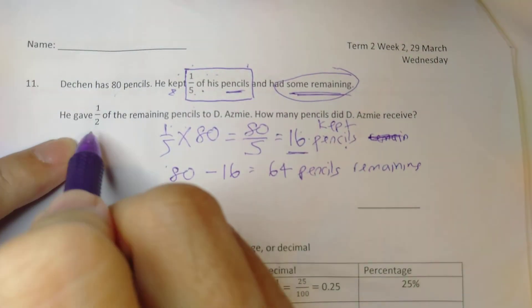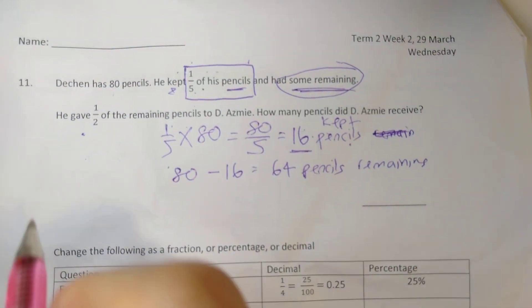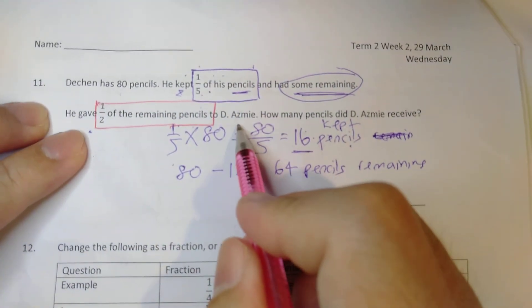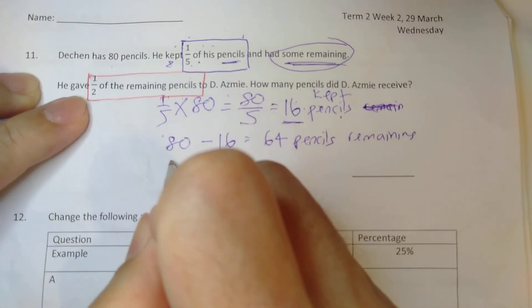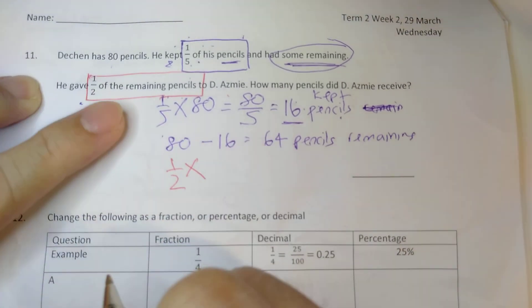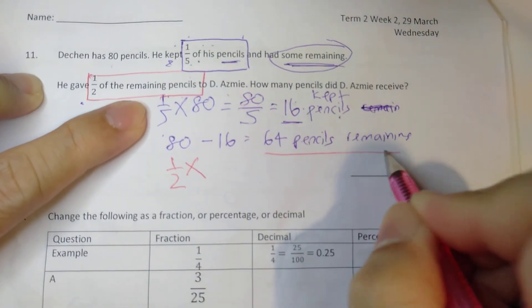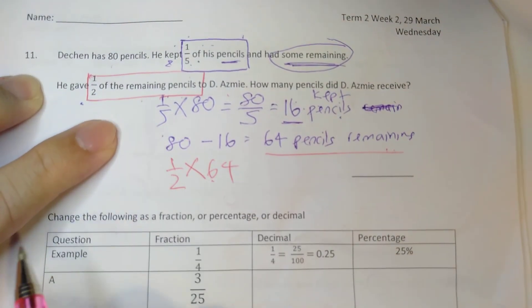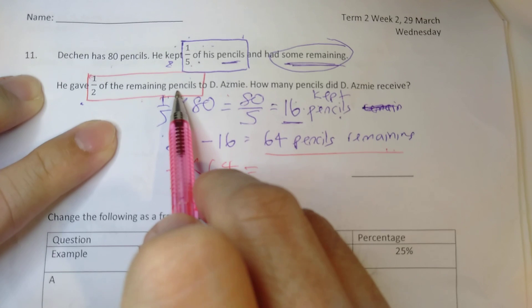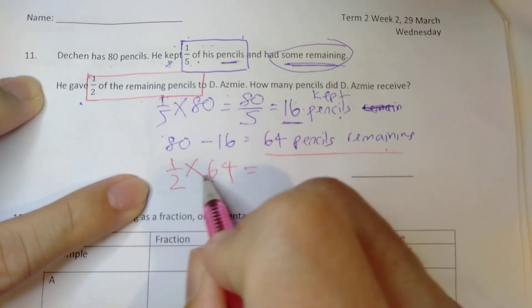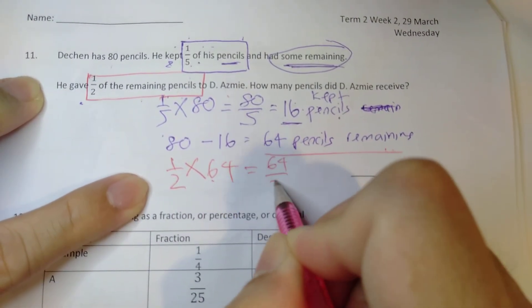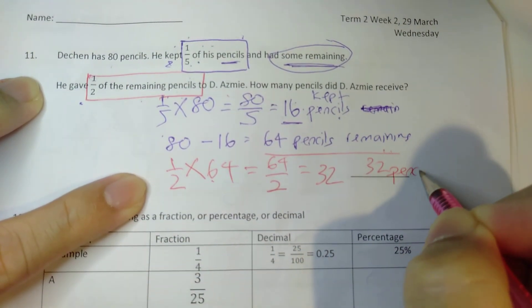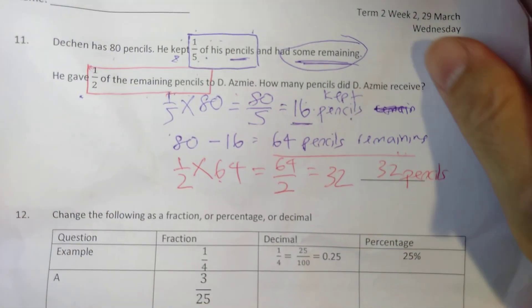Now, he gave half of his remaining. Again, let's box this up. Half of his remaining pencils to ask me. So half, I copy half. Off, I change your times. Remaining is here. Remaining. So half times 64. Again, I'm very nice to you. I'm giving you the working. But I give you in words. Just need to change it to numbers. So half times 64 is 64 divided by 2. That gives you 32 pencils. So ask me got 32 pencils.